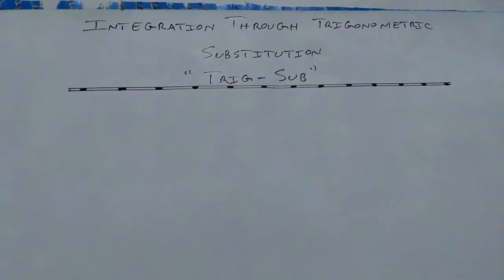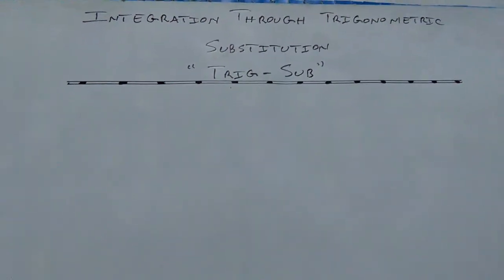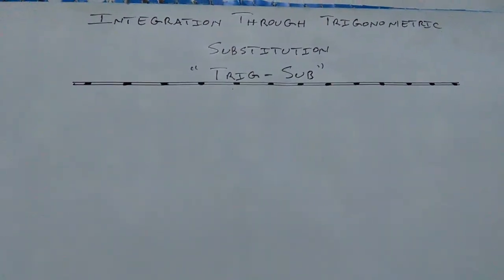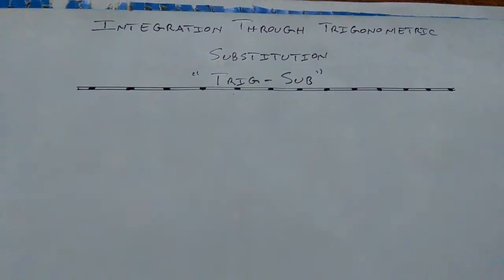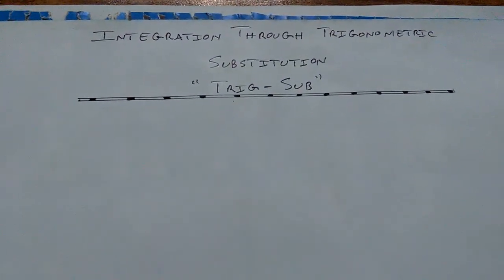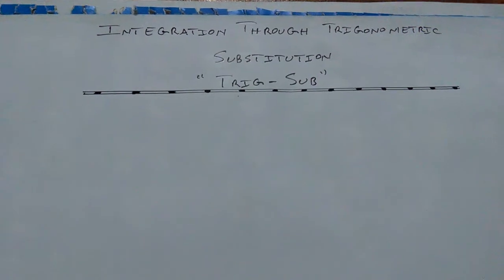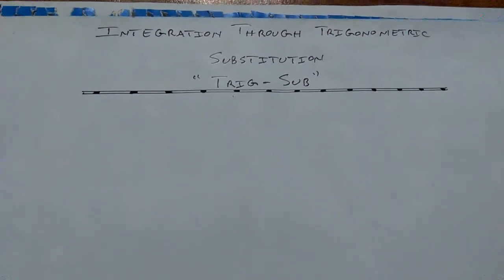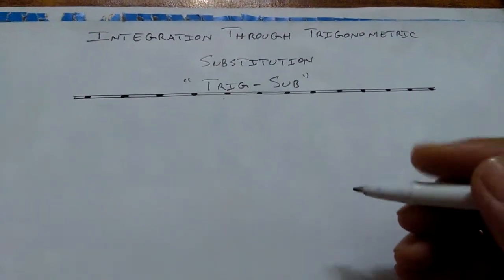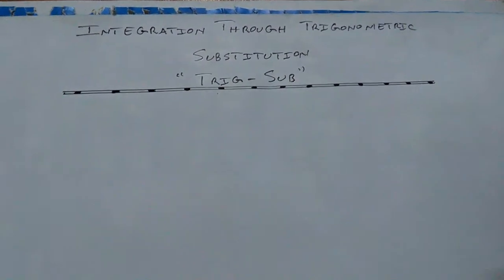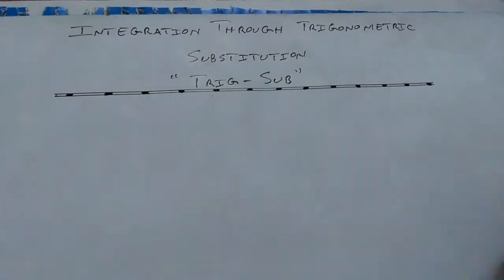We are going to cover basically three types of trigonometric substitution, and in this video we are going to discuss the very first type. That is, if you are having an integrand of a specific type, let me write it down.